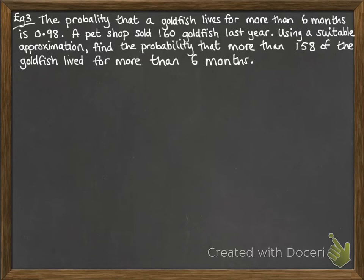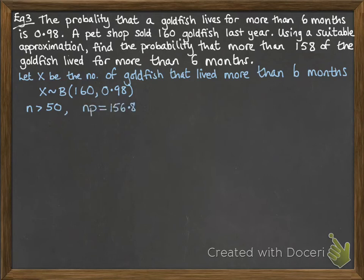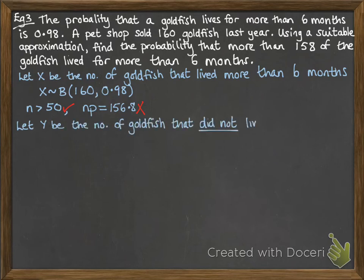The probability that a goldfish lives for more than 6 months is 0.98. A pet shop sold 160 goldfish last year. Using a suitable approximation, we want to find the probability that more than 158 goldfish lived for more than 6 months. If we let x be the number of goldfish that lived for more than 6 months, then x follows a binomial distribution with a sample size of 160 and probability of success 0.98. However, np is 156.8, which is far too big — not less than 5 as required for a Poisson distribution. So instead we consider the opposite form.